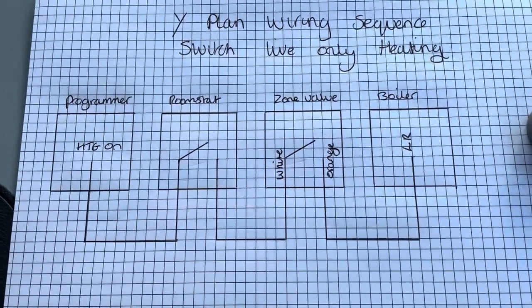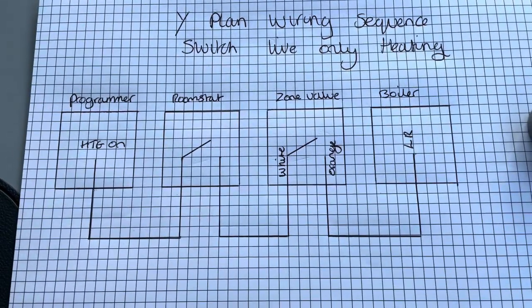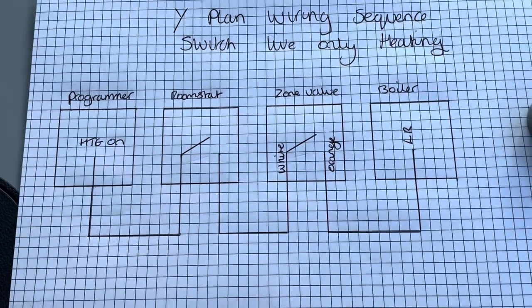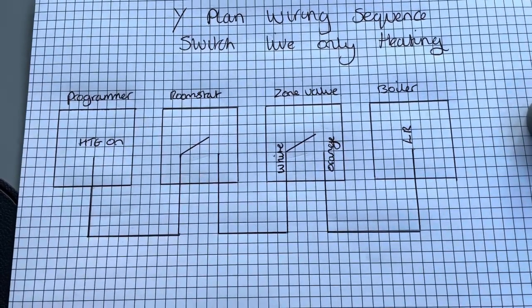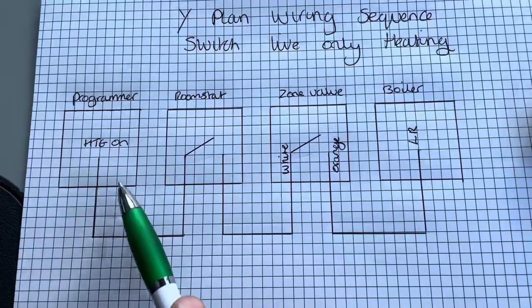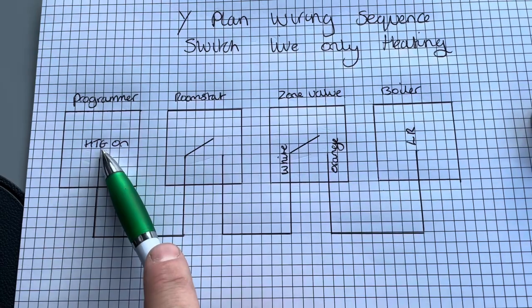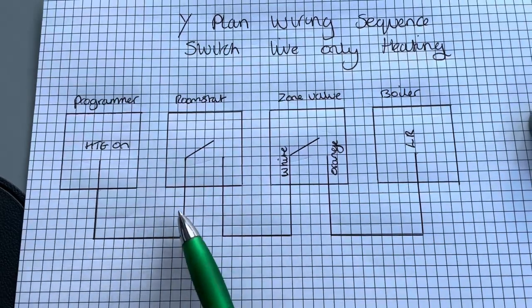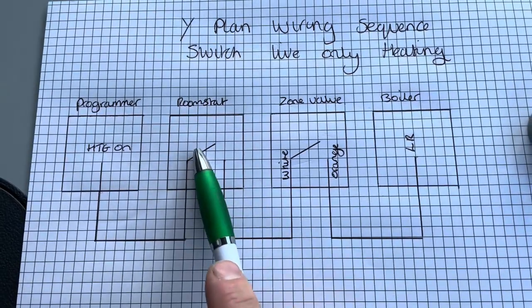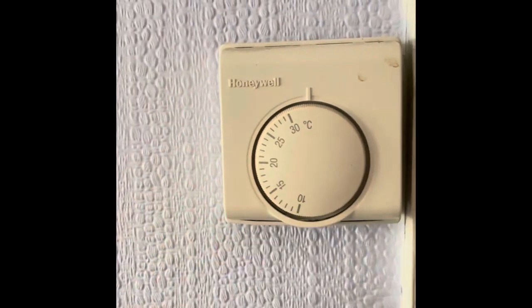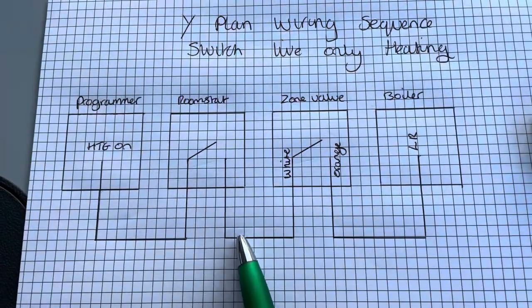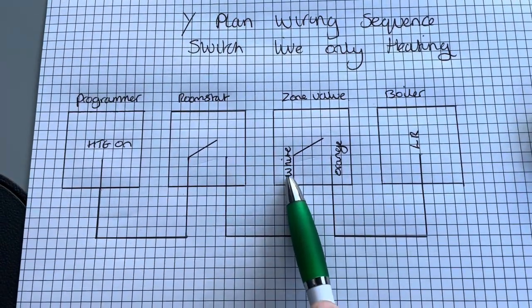So Y-Plan wiring sequence switch lives only. These are the important things. This is how you get your heating on. So you click your programmer, heating on. It then sends power to your room stat. If you're calling for heat, it passes through and goes to the white wire on the zone valve.